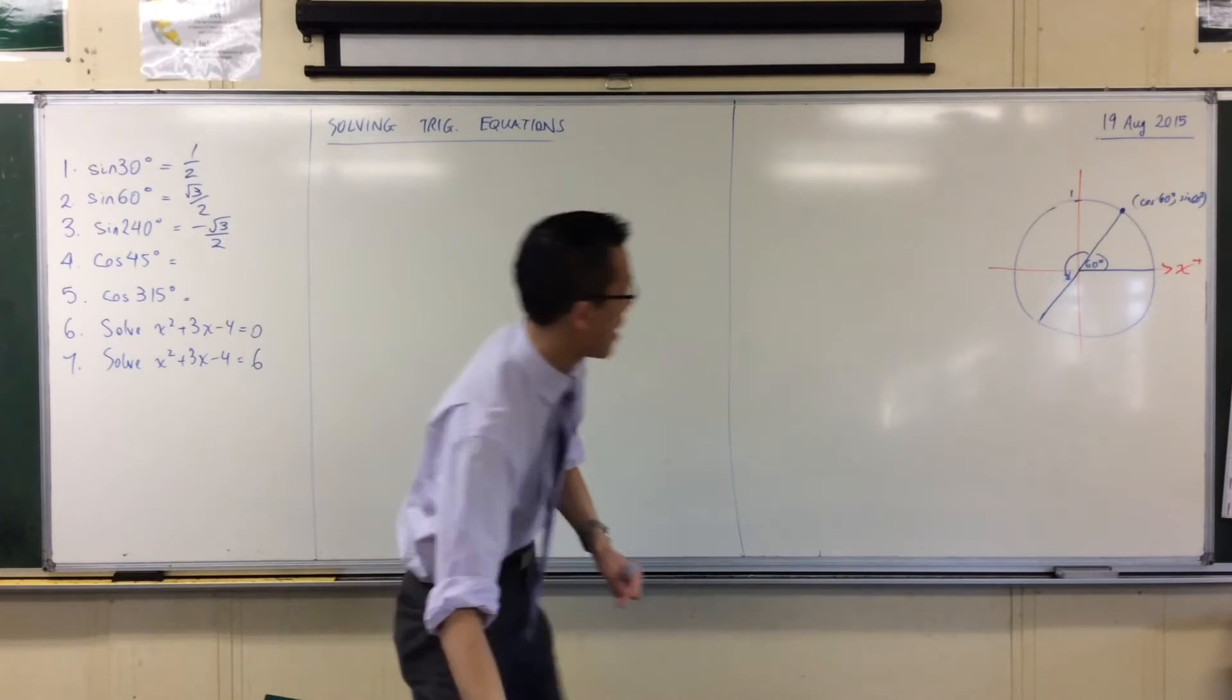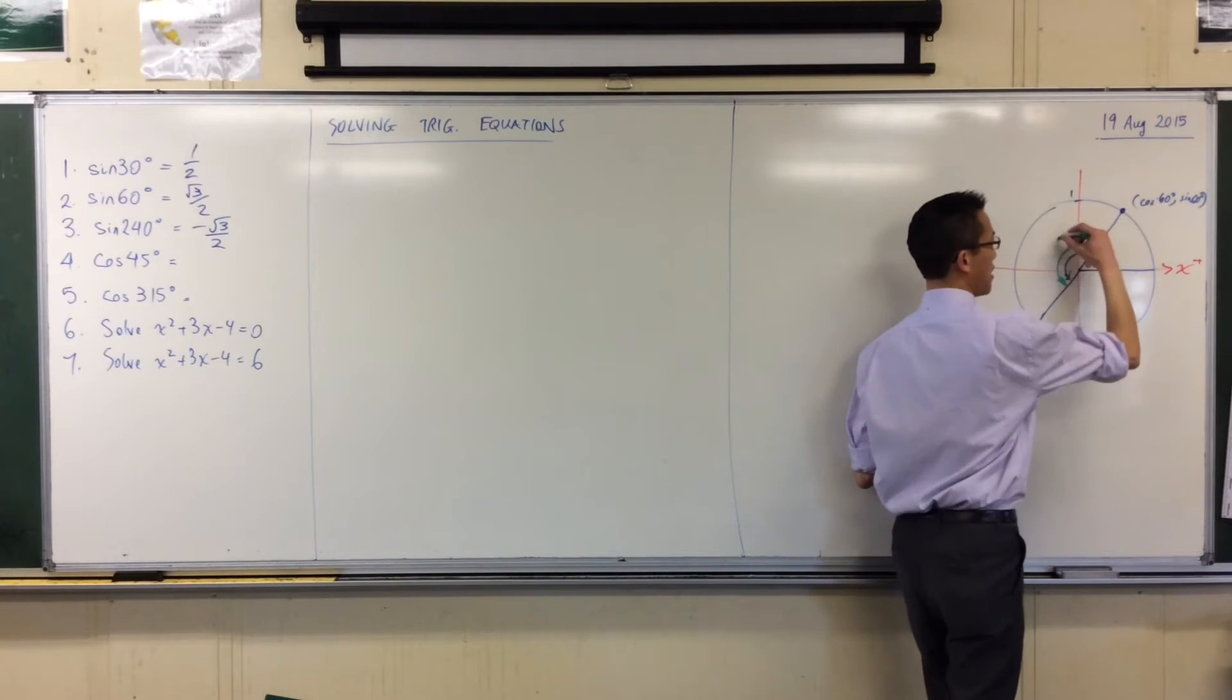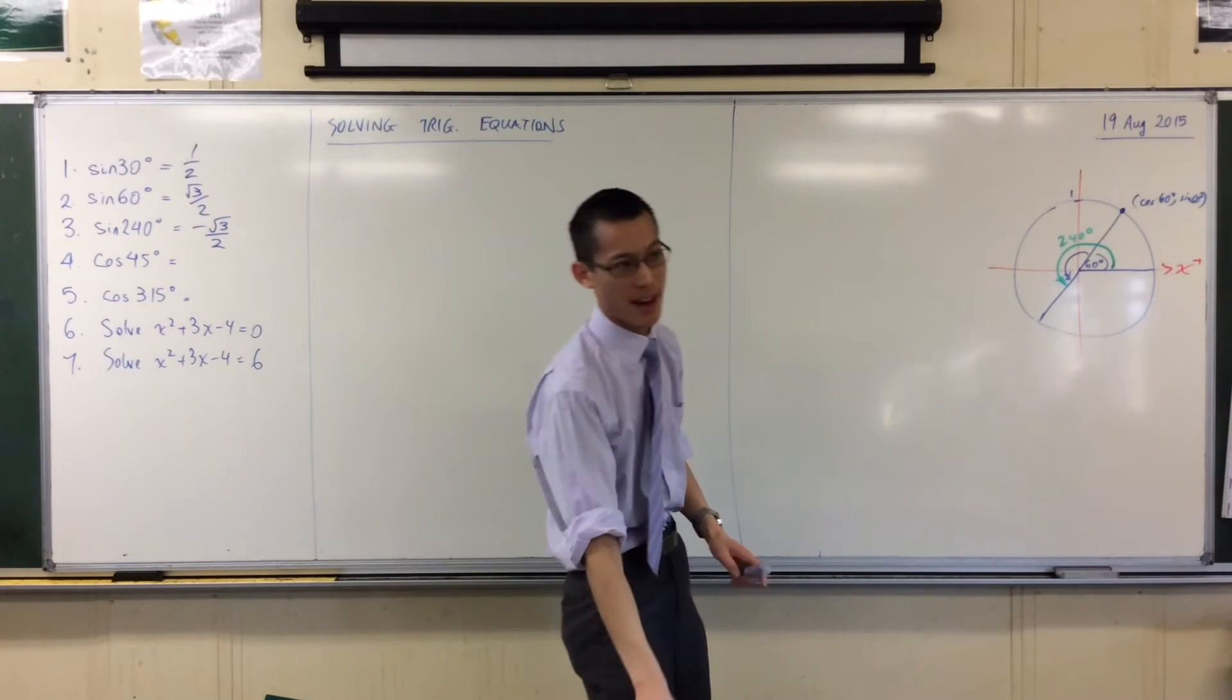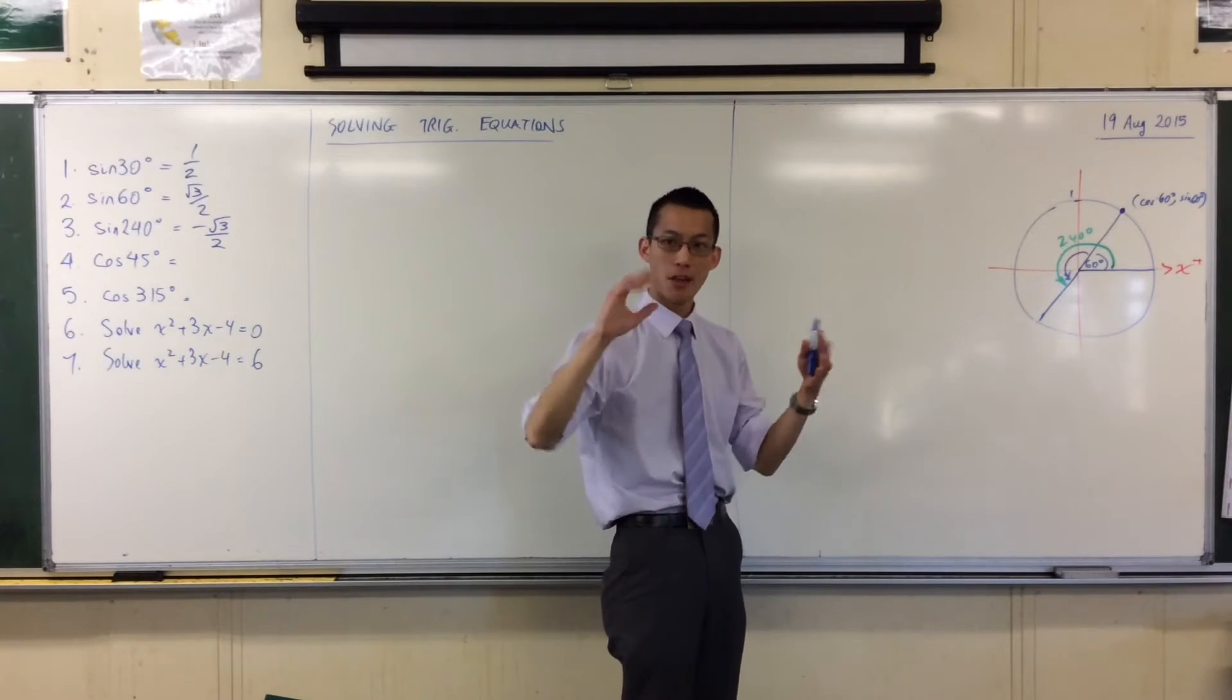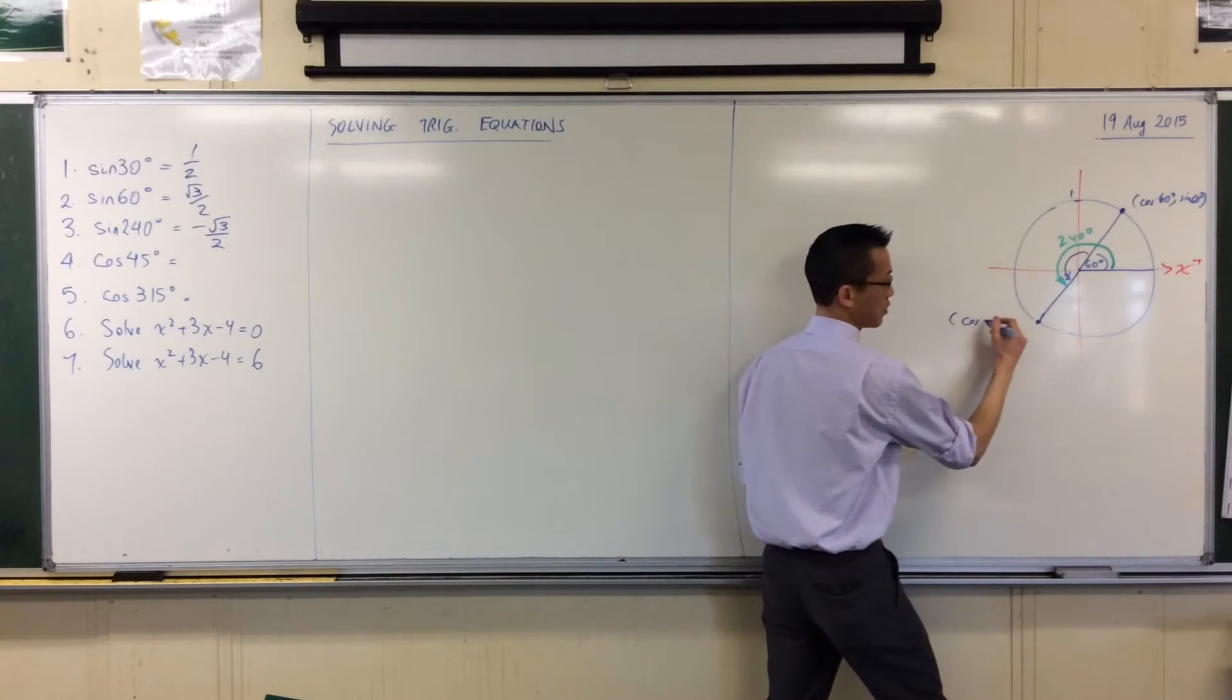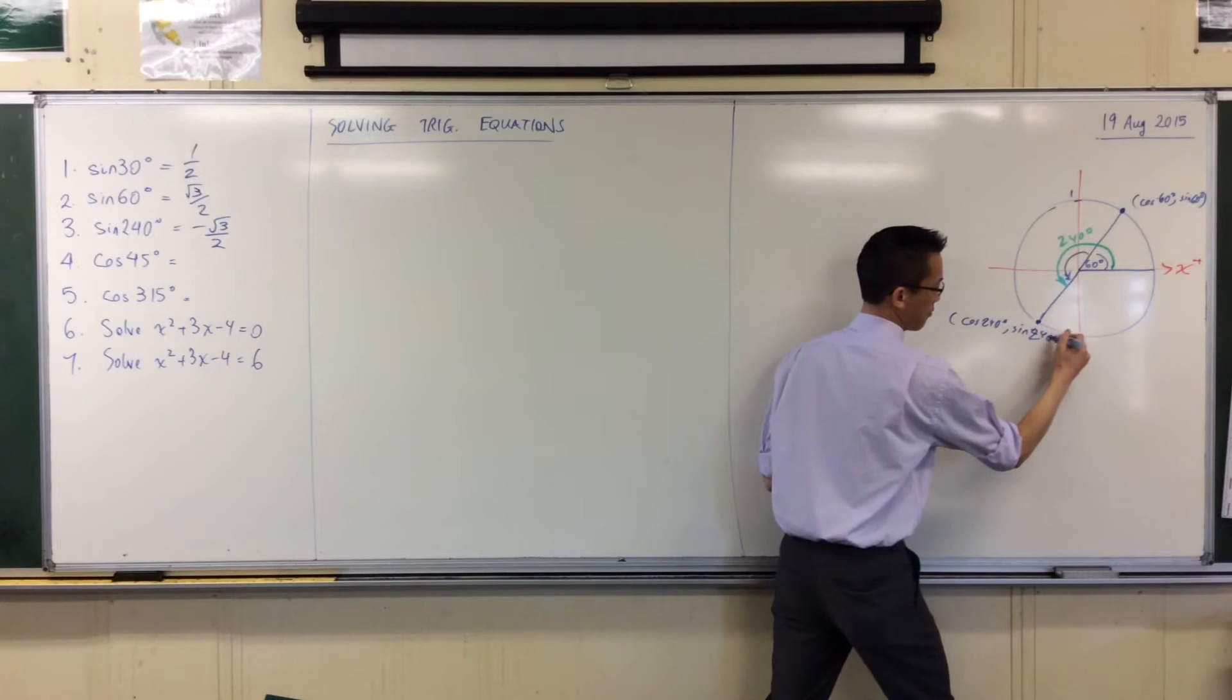There's the first 60 that I put on there, and then I add 180. So now all the way around, that's my 240 degrees. And I'm still asking about sine, so I'm still interested in the y-coordinate. So I've got this coordinate being cos 240, sine 240.